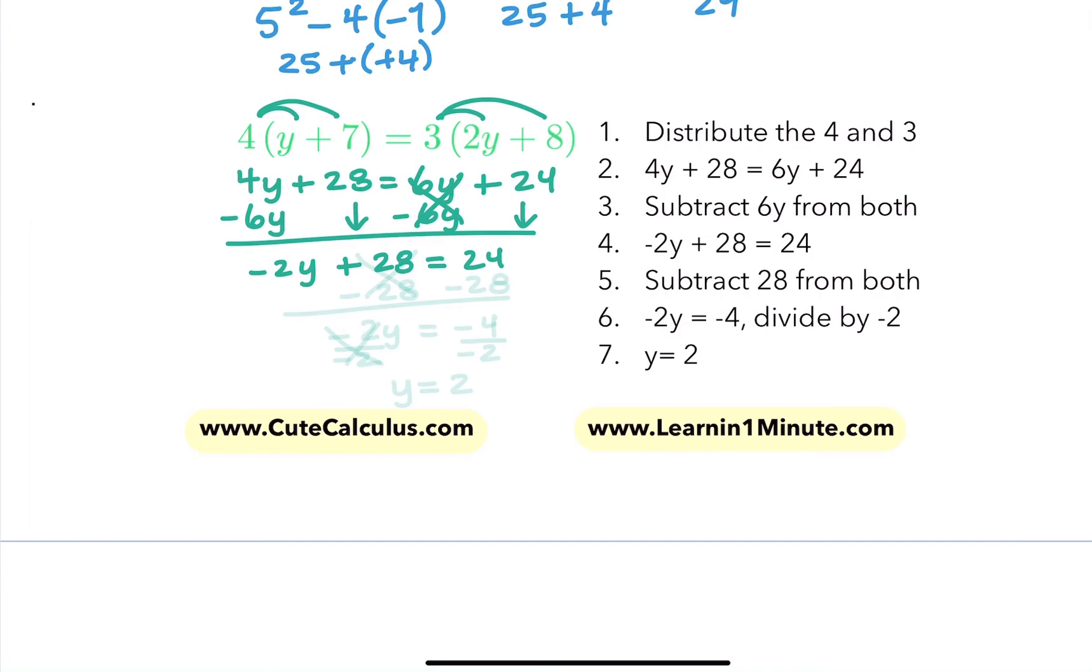And now I want to get the 2y term by itself, so I'm going to subtract 28 from both sides. So now I've got negative 2y equals negative 4. And now at this point, to get the y by itself, I'm just going to divide by whatever's next to the y. It's being multiplied by, so we'll divide by negative 2, and we'll get y equals 2.